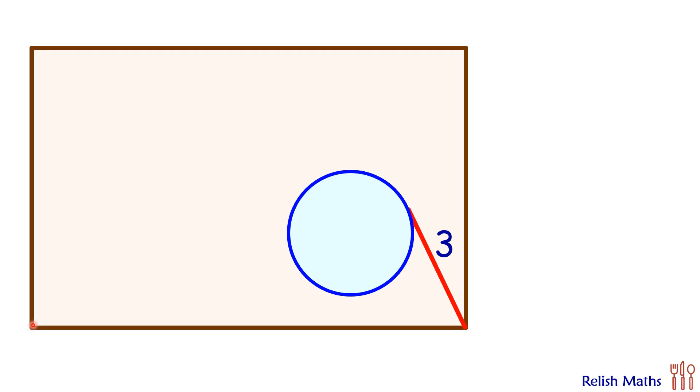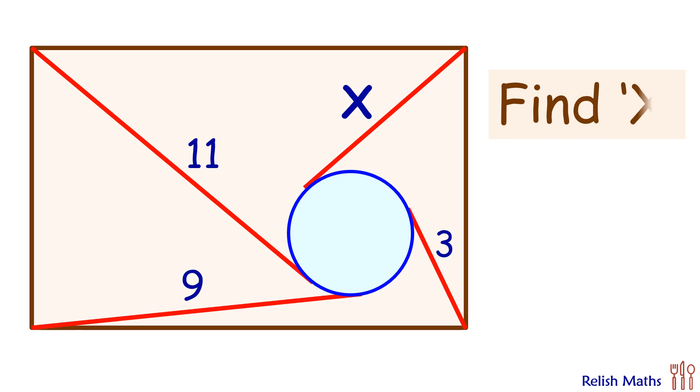From the second vertex we are drawing a tangent and its length is 9 cm. From third vertex, the length of tangent is 11 cm. Using this limited data, we have to find the length of the tangent from the fourth vertex, or we have to find the value of x.